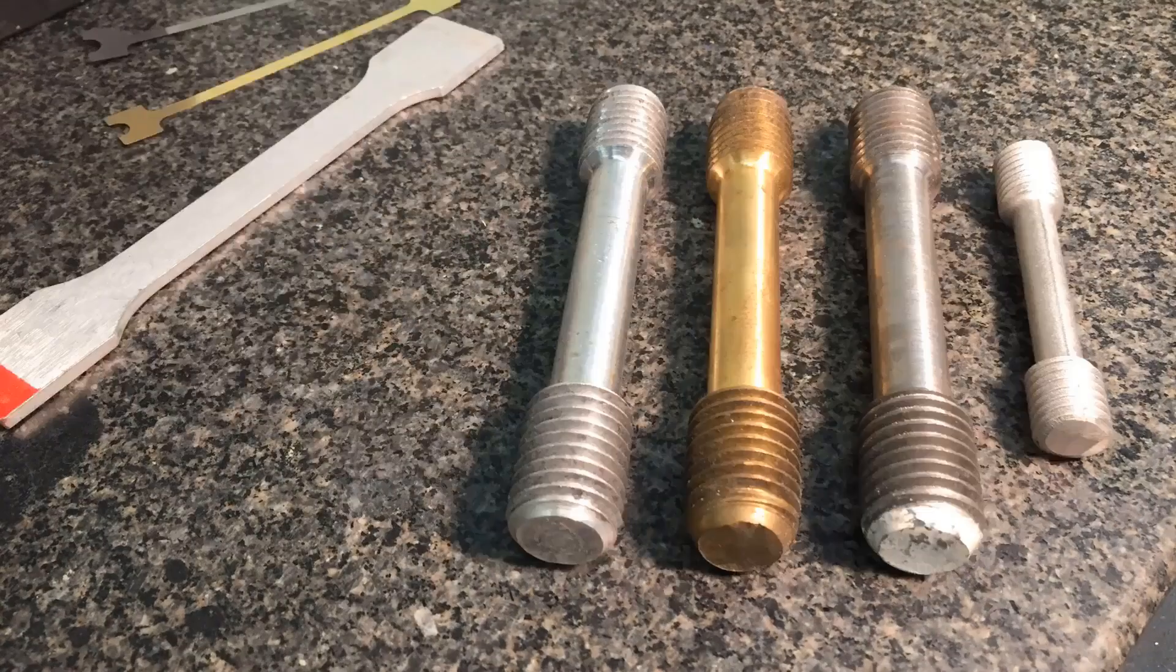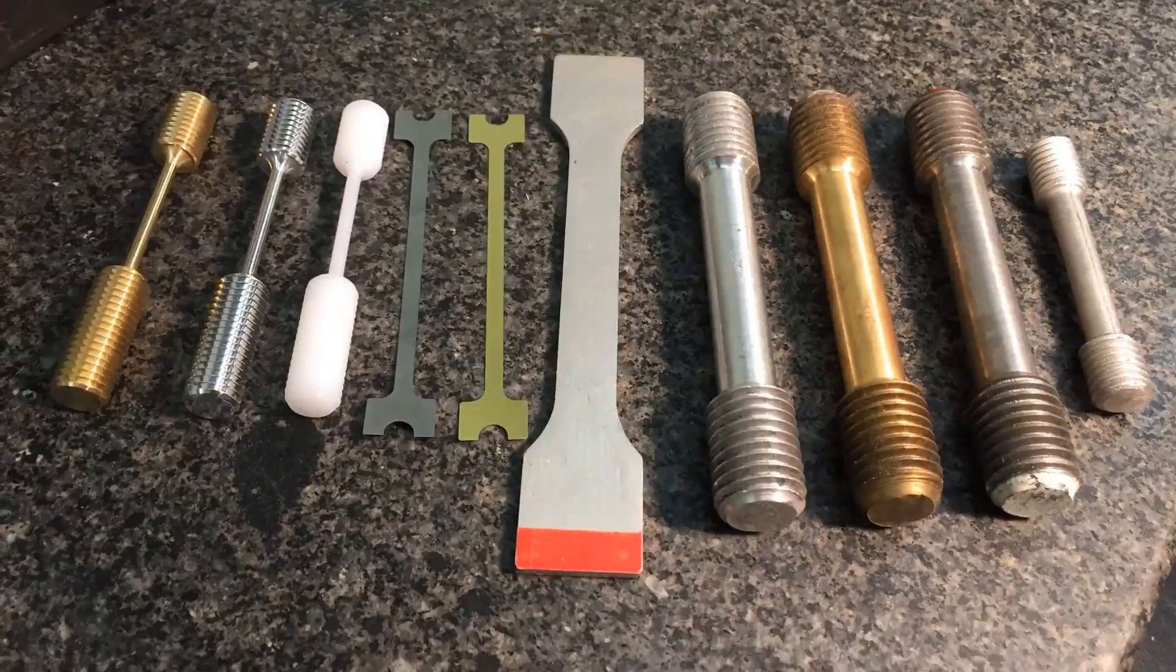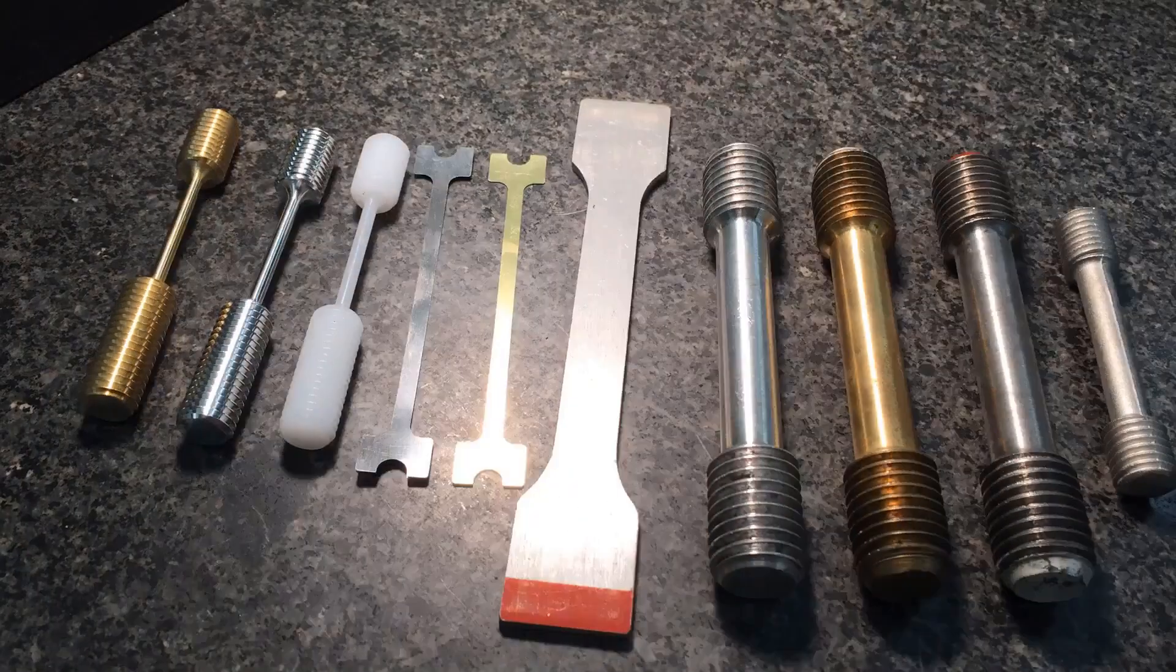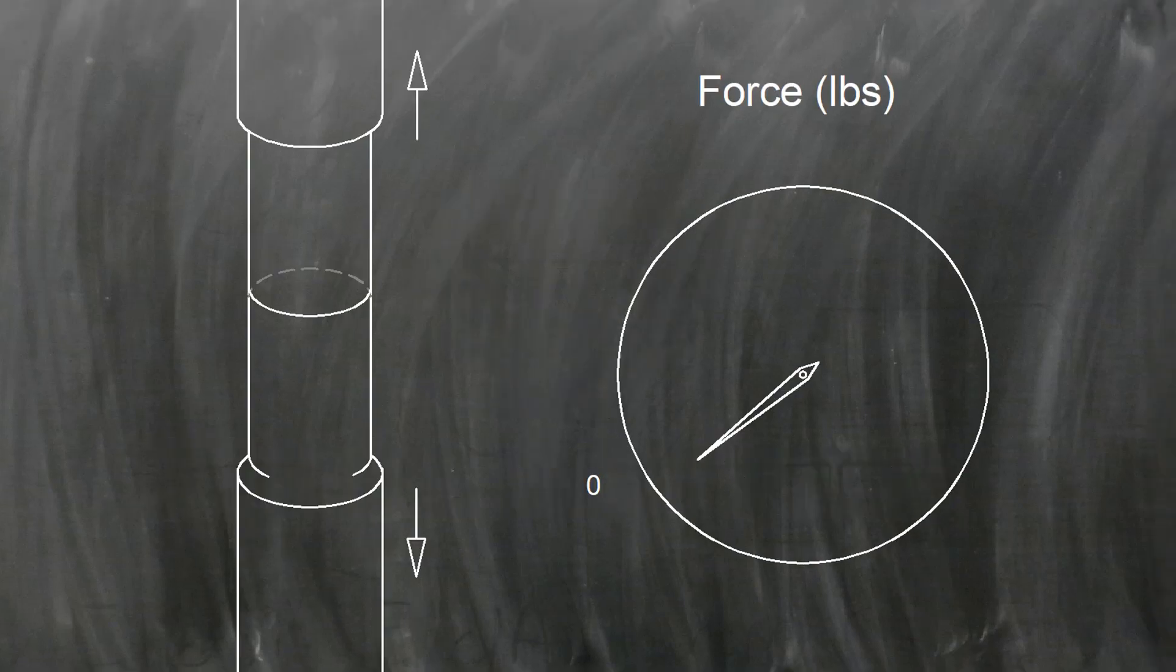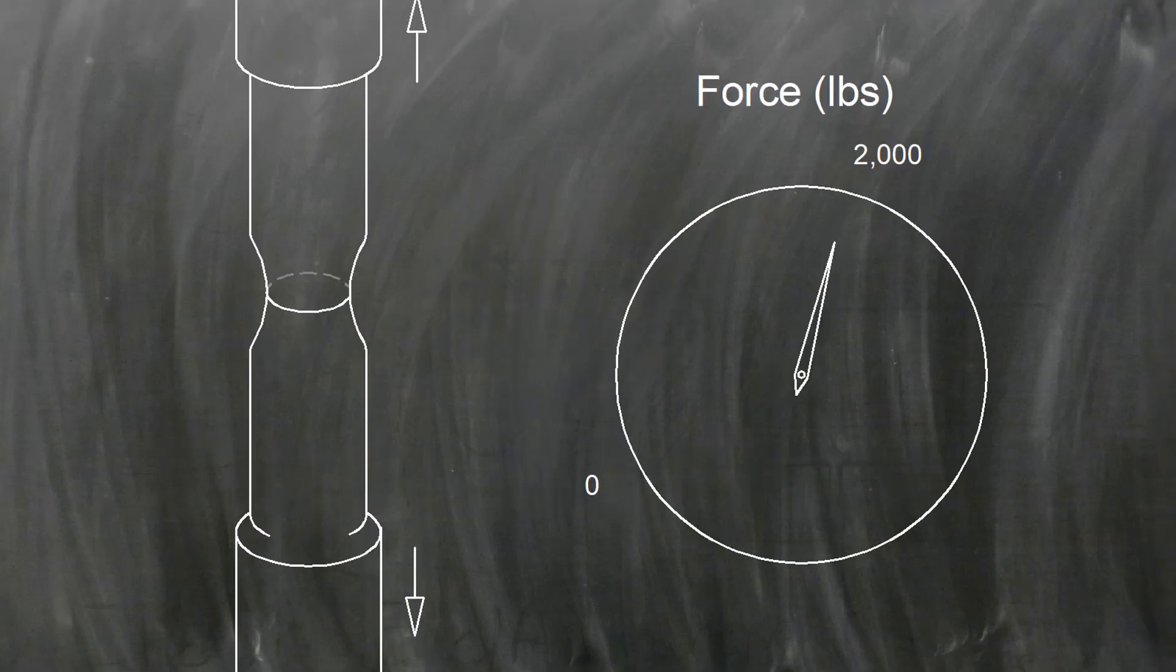A tensile test is a great way to see how strong a material is. Let's take a look at what a tensile test will tell us. A tensile test is a way to see how strong a material is by pulling on it.